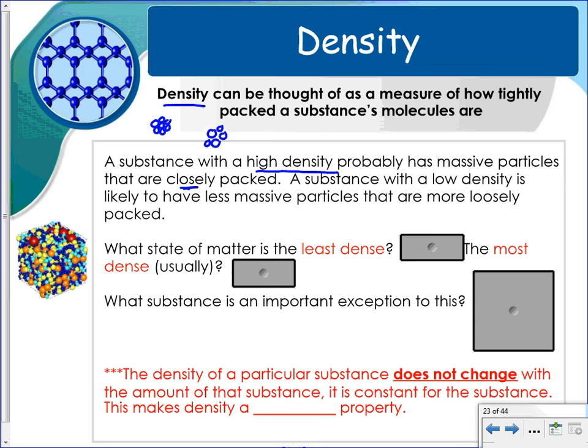So which state of matter do you think would be the least dense? Gas, because those particles are not packed in tightly together. They take the shape of their container. The most dense usually would be solid. You know from a previous unit solids are packed in tightly together, so gases spread out.